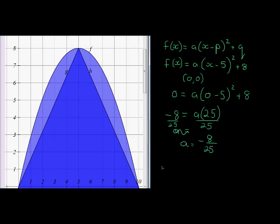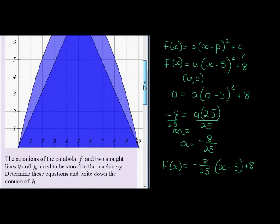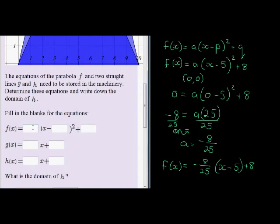So if we were to write down the full equation for F(X), F(X) is equal to negative 8 over 25(X minus 5) squared plus 8. And we can go put that in here now. A we worked out is negative 8 over 25, X minus 5, and plus 8. There we go.